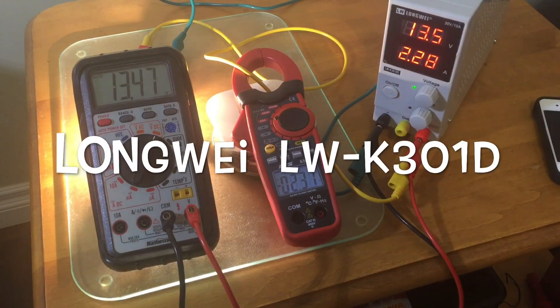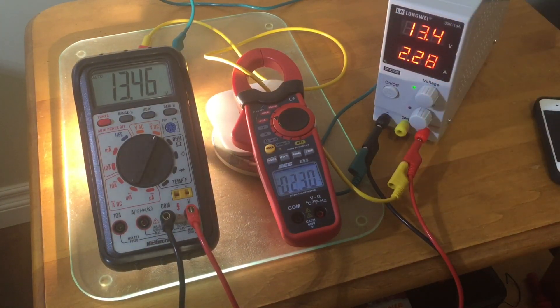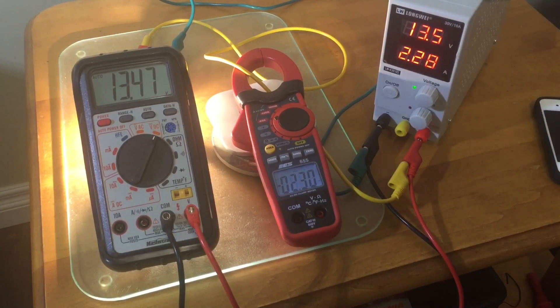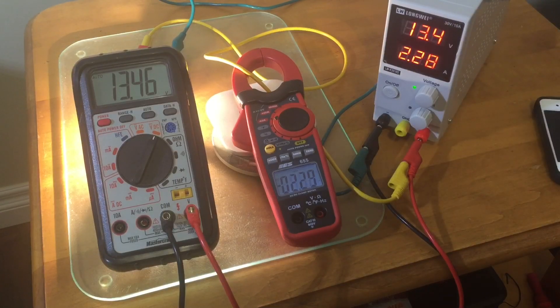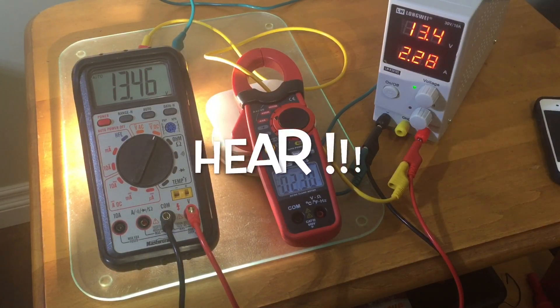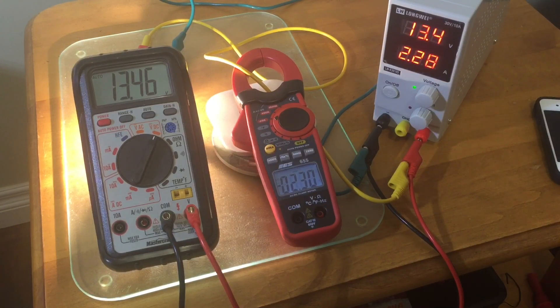A two-minute review of the Longwei 30-volt DC, 10-amp output power supply. It's a switching mode power supply as opposed to a linear one—that's how they can get the compact design. It's fan-cooled with forced air cooling in the back, which I'll speak to in a moment.